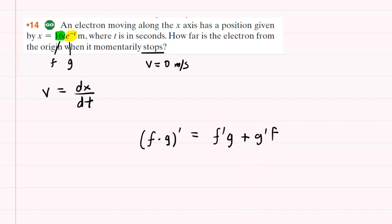Let's lay this out so that we can accurately compute the derivative. We know that the f function is 16t and the g function is e to the negative t. We're also going to need to find the derivative of each of these functions. The derivative of 16t is just 16.